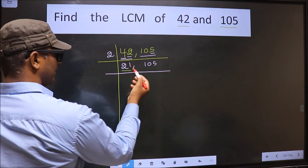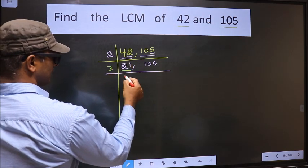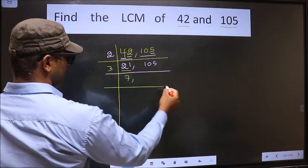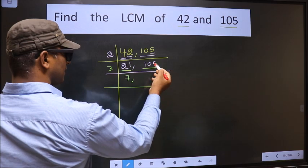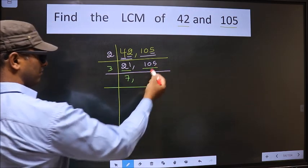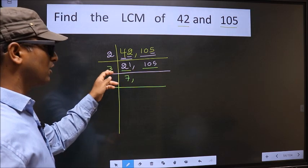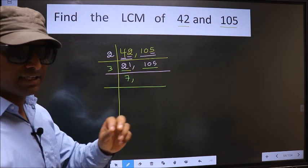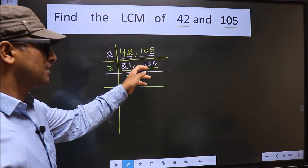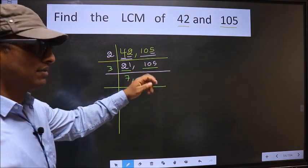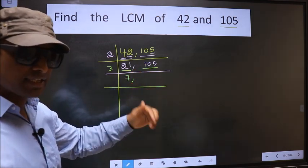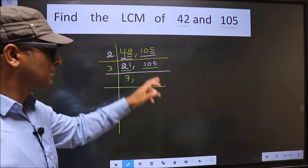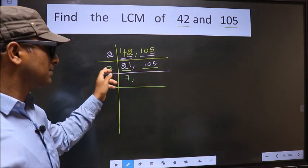Here we have 21. 21 is 3 times 7 is 21. Now to check the other number 105, whether it is divisible by 3 or not. To check, we should add the digits. That is 1 plus 0 plus 5, 6. Is 6 divisible by 3? Yes. So this number also divisible by 3.